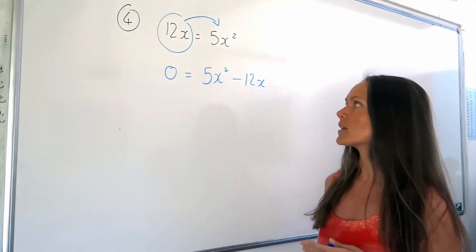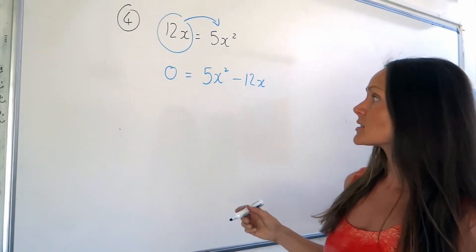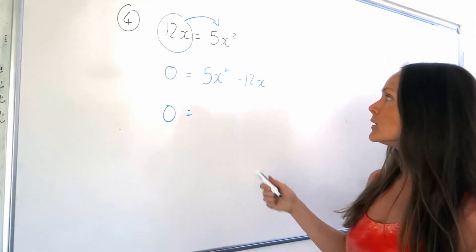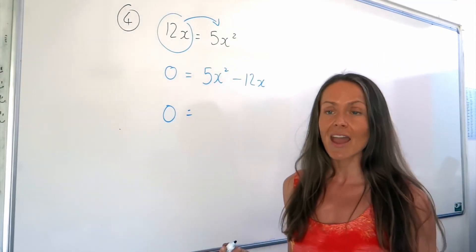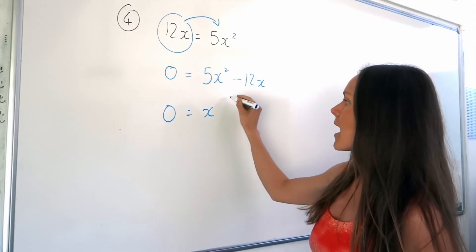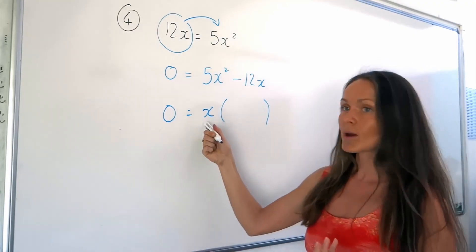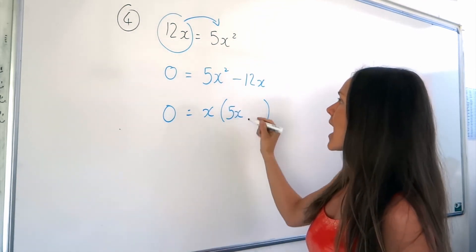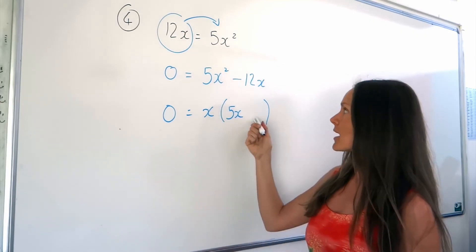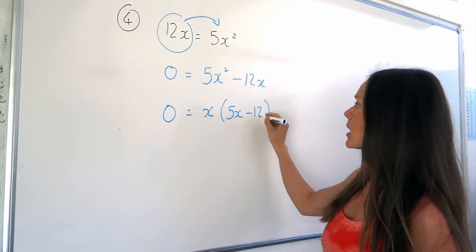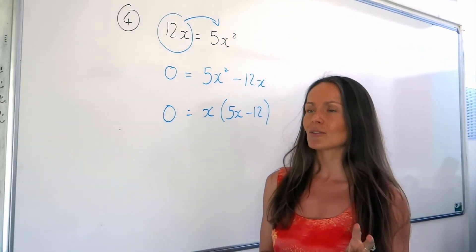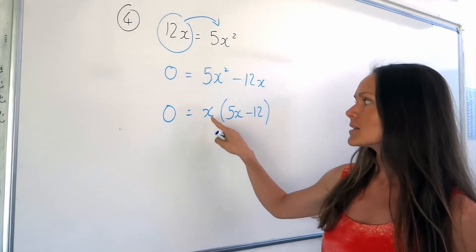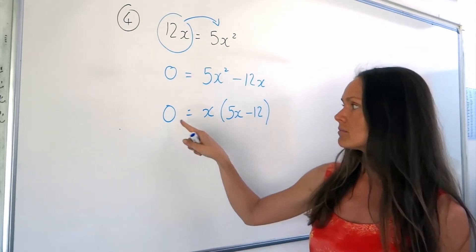Just like in all the other questions, I'm going to factorise. The only thing common in these two terms is the letter x, so I write x and open my brackets. What do I multiply x by to get back to 5x squared? Just 5x. And what do I multiply x by to get back to negative 12x? Just negative 12. So there will be two values of x. The first one is just 0, because if x is 0, then 0 times a number gives me 0.